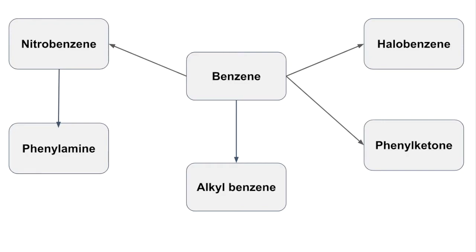We'll start by looking at the conversion of benzene to nitrobenzene — that's where you substitute a hydrogen on the benzene ring for an NO2 (nitro) group. To do that, you react benzene with concentrated nitric acid in the presence of a concentrated sulfuric acid catalyst. The temperature needs to be kept between 50 and 55°C; if you use a higher temperature, you run the risk of poly-nitration, where more than one nitro group substitutes, and that can be explosive.